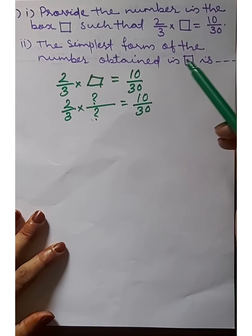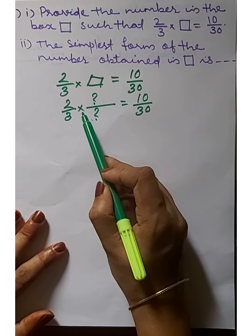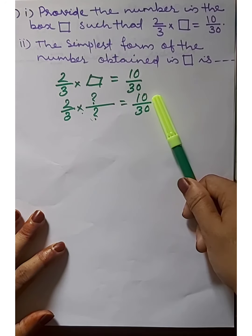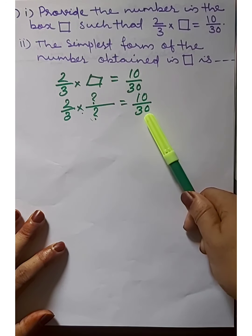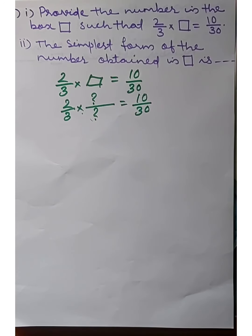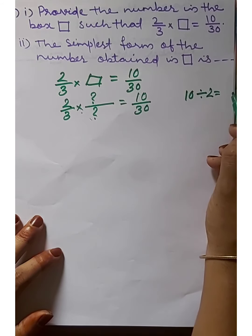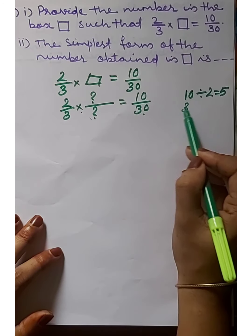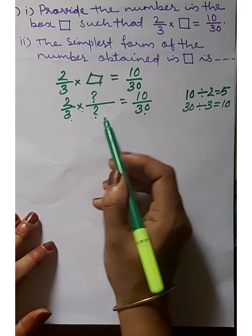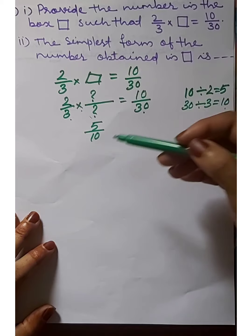Here 2/3 multiplied by the fraction in the box equals 10/30. The opposite operation of multiplication is division. The numerator: 10 divided by 2 equals 5. The denominator: 30 divided by 3 equals 10. The fraction in the box is 5/10.